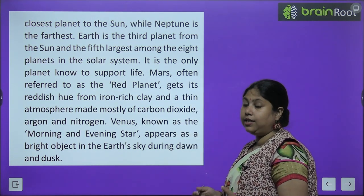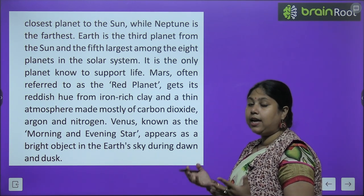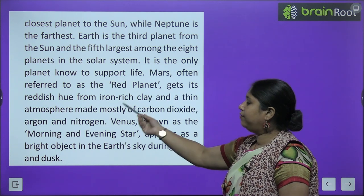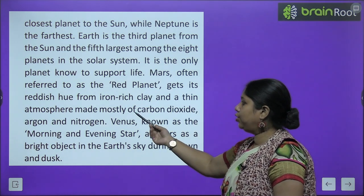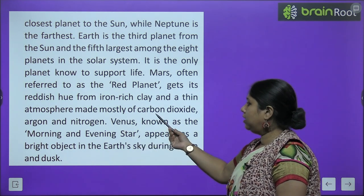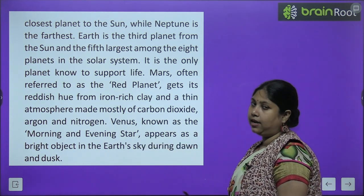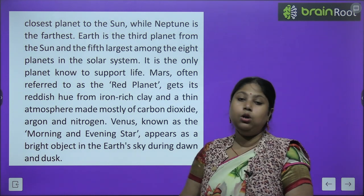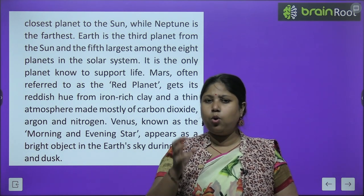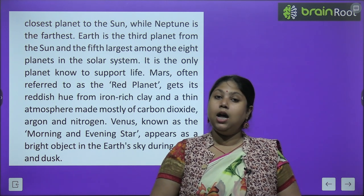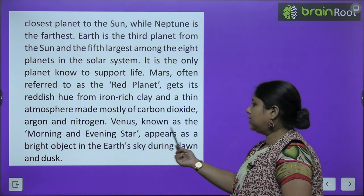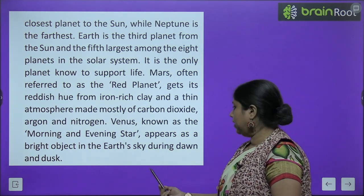Earth is the only planet known to support life — yahi ek aisa grah hai jisme jeevan panap sakta hai, yani jeev jantu reh sakte hain. Mars, often referred to as the Red Planet, gets its reddish hue from iron-rich clay and a thin atmosphere made mostly of carbon dioxide, argon and nitrogen.